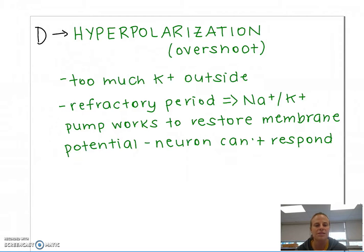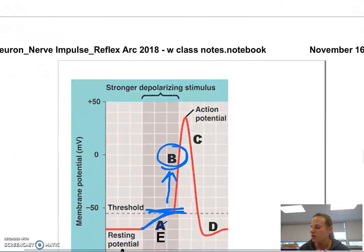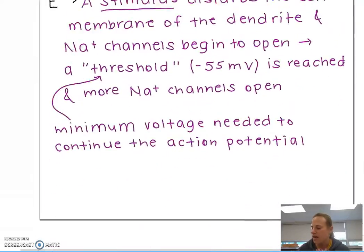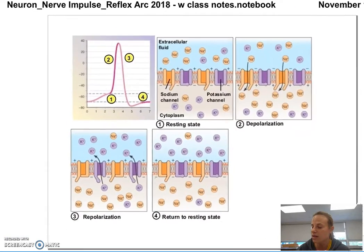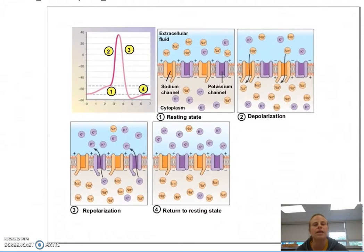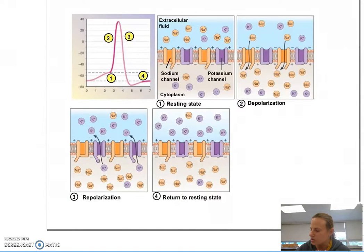And what happens is a refractory period, where the sodium-potassium pump works to restore that membrane potential. And during this time, that neuron cannot respond. Another impulse cannot be sent down the axon, nor can the neuron respond to an incoming impulse.